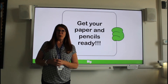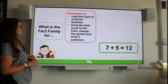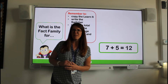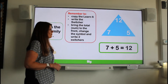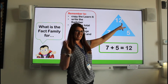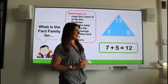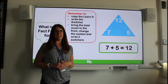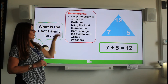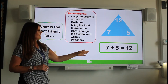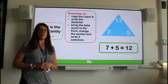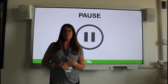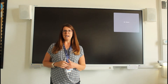Now you're going to have a go at doing one on your own. Are you ready? Our calculation is seven plus five equals 12. What can we use to help us with our fact families? That's right, a fact family triangle. Remember to write our biggest number at the top and our two switchers at the bottom. Then we go through our remember-twos: first, copy the learn-it down; second, write the switchers; third, bring the total to the beginning and change the calculation to a takeaway, then write the switchers. Pause the video to give yourself a chance to write down your four calculations for that fact family.